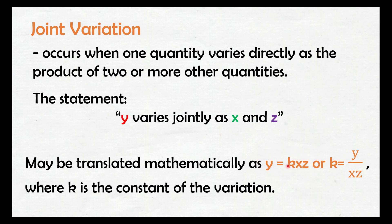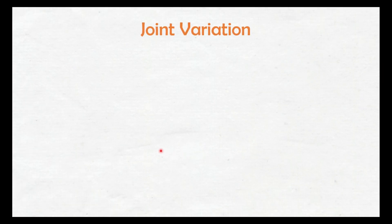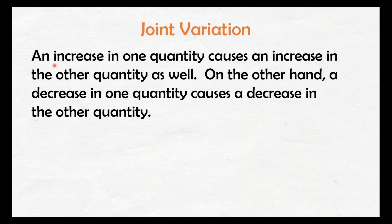Para makuha yung constant equation, kailangan i-isolate si k sa right side. I-divide natin both sides ng equation ng xz. Kapag bini-divide ko ng xz ito, makakancel itong xz dito, tapos y over xz naman ito — kaya nakuha yung y over xz dyan. Joint variation: an increase in one quantity causes an increase in the other quantity as well. On the other hand, a decrease in one quantity causes a decrease in the other quantity.